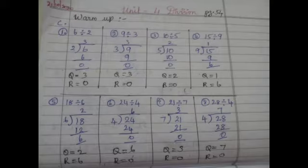Next sum: 10 divided by 5. We say the 5 times table up to 10: 5 ones are 5, 5 twos are 10. So 2 times 5 is 10. 5 twos are 10; 10 minus 10 is 0. The quotient is 2 and the remainder is 0.